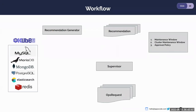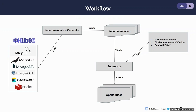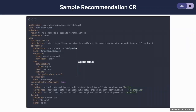Now let's see the workflow of the Recommendation Generator and Supervisor together. First, the Recommendation Generator watches KubeDB resources — currently supporting six databases: MySQL, MariaDB, MongoDB, PostgreSQL, Elasticsearch, and Redis. It generates recommendations and creates recommendation objects. The Supervisor watches for those objects and checks the maintenance window or cluster maintenance window and the approval policy. If the recommendation satisfies the approval policy and the current time is within the maintenance window, the Supervisor creates the ops request.